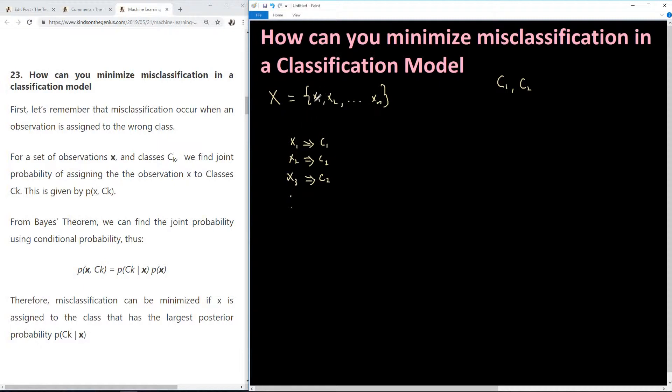Now if an observation belongs to a class and you assign it to the wrong class then a misclassification occurs. So if x1 belongs to C2 but we assign it to C1 that is when misclassification occurs. All right so let's take the formal explanation.